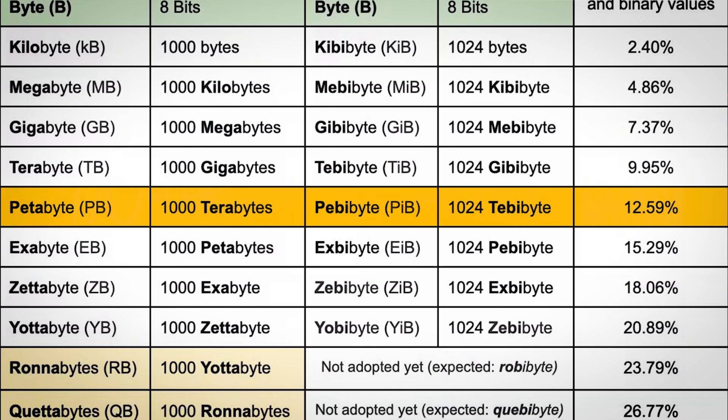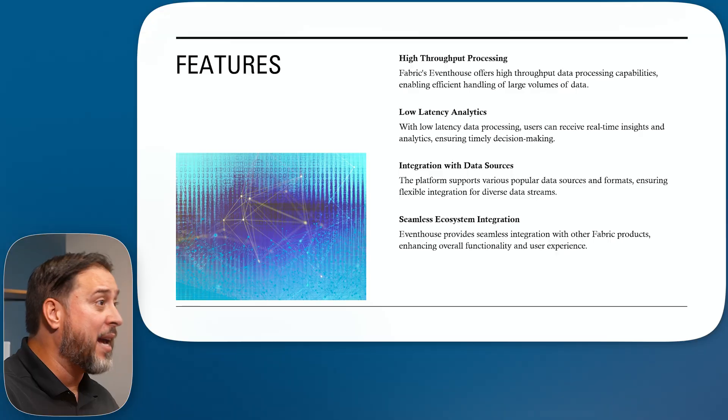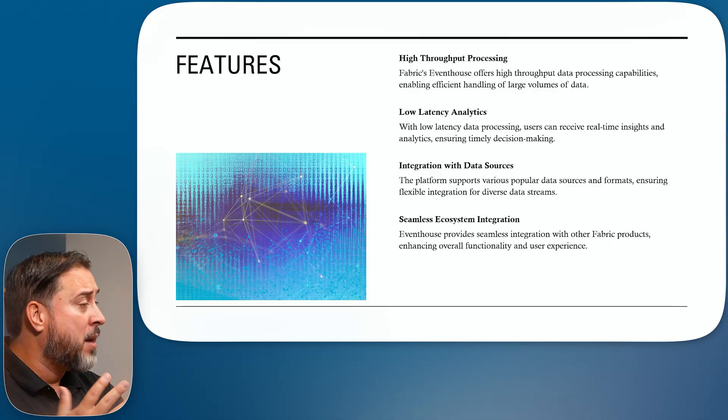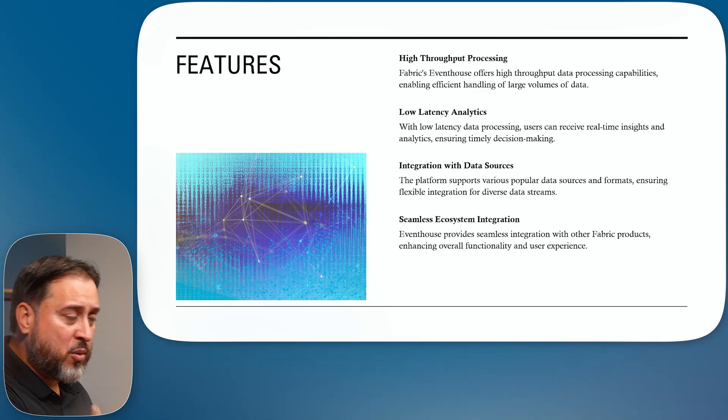Although this is driven more towards data in motion and event-driven information, you can use it for traditional sources as well. You have opportunities through data flows and pipelines to get data into a KQL database. There will definitely be circumstances where this makes sense — you may have streaming data but also referential tables you want to correlate with.